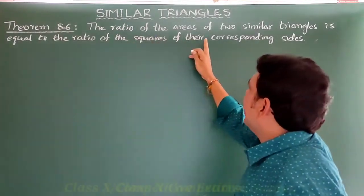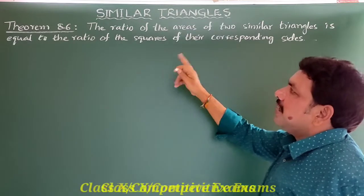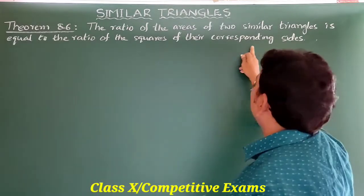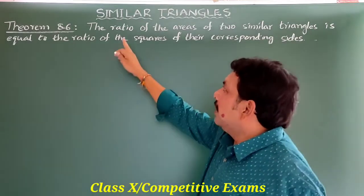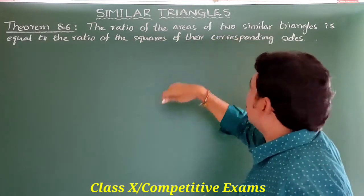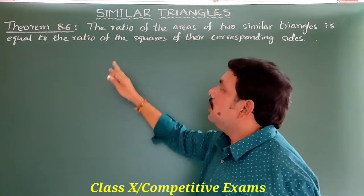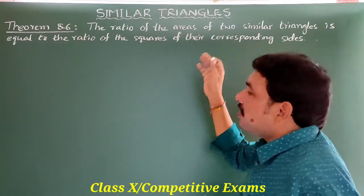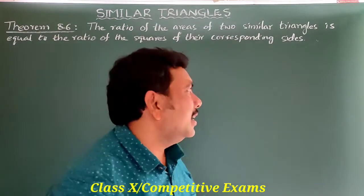The ratio of the areas of two similar triangles is equal to the ratio of the squares of their corresponding sides. We have to prove that.